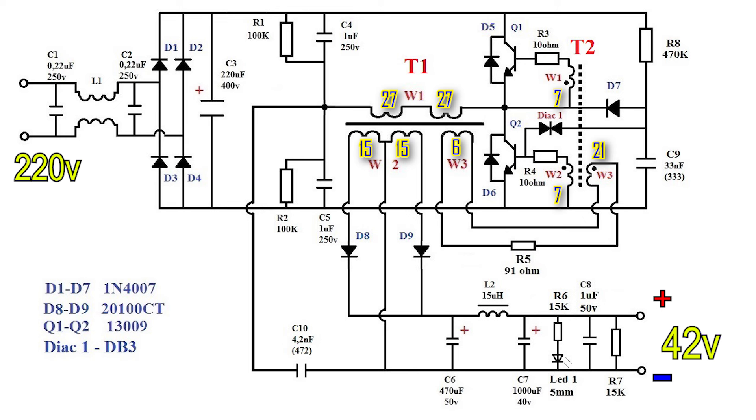The trigger circuit is based on elements R8, C9, and DIAC-1. After voltage is applied to the power supply, capacitor C9 begins to charge through resistor R8.